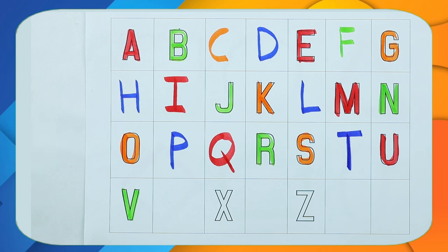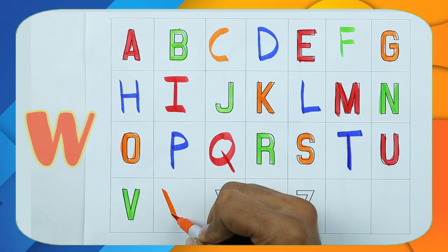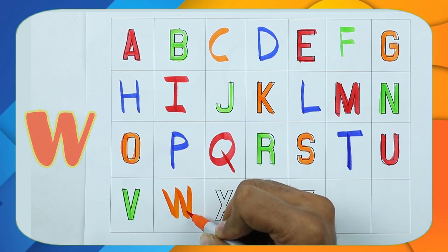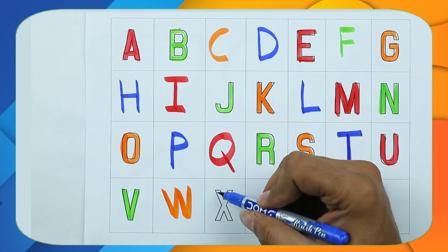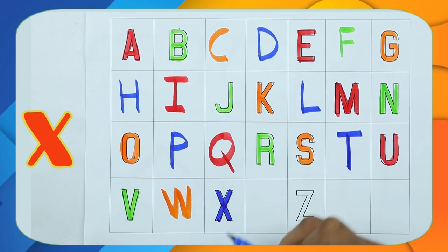Next W. Yes, right. W with orange color. W for watch. X for xylophone.